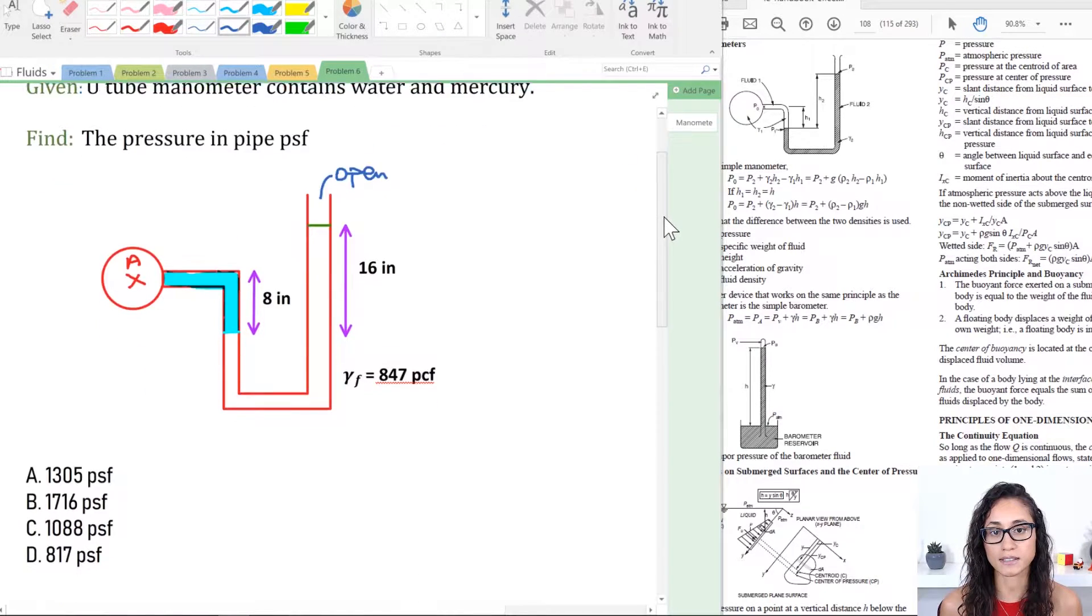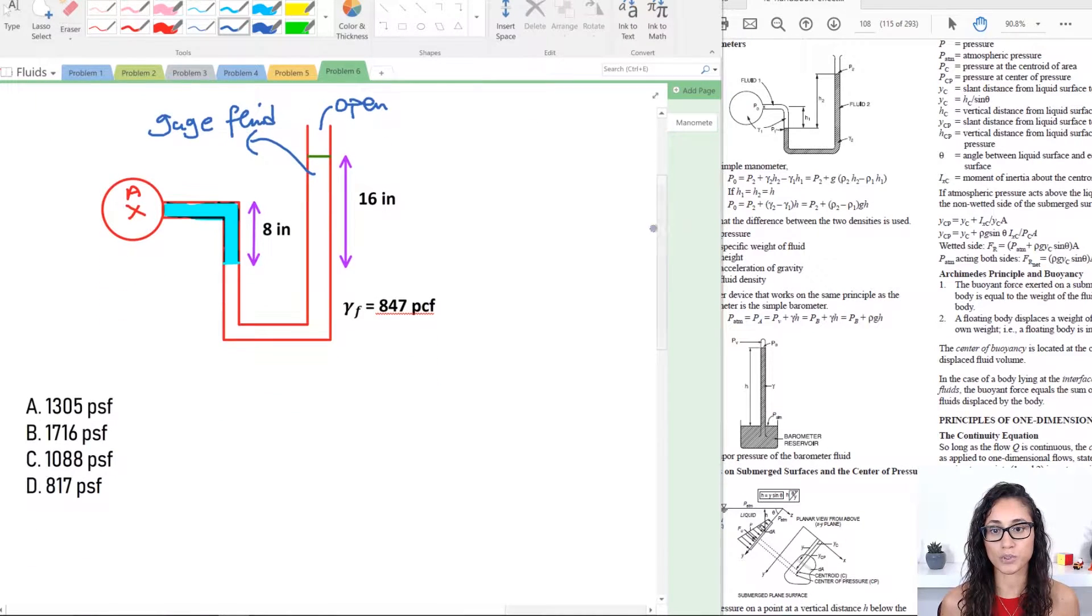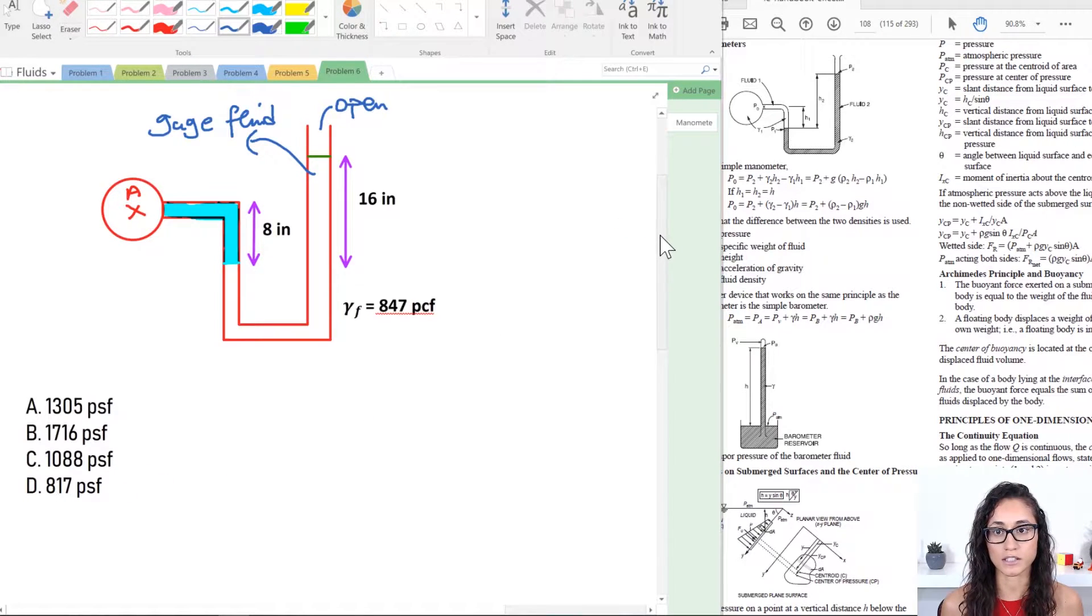Now also note guys, that this mercury is usually called gauge fluid, so in case you get it in the test you don't get confused. We're given the unit weight of the fluid or the mercury which is 847 PCF, pounds per cubic feet. So yeah let's start solving.